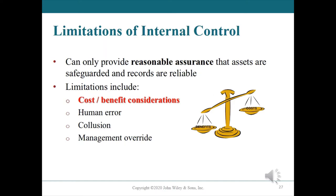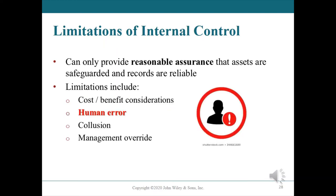Cost-benefit considerations mean that the cost of establishing control activities should not exceed the benefits expected from their use. If the benefits — such as reduced asset theft — are less than the cost of implementing internal control, management would not implement the control. The impact of human error is also an important limiting factor. A well-designed system can become ineffective as a result of lack of training, employee fatigue, carelessness, or indifference.